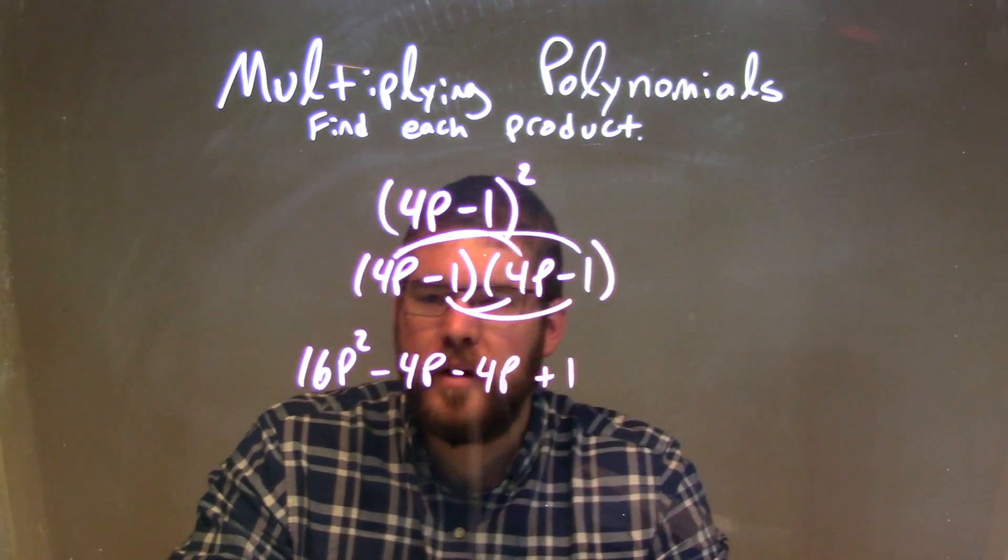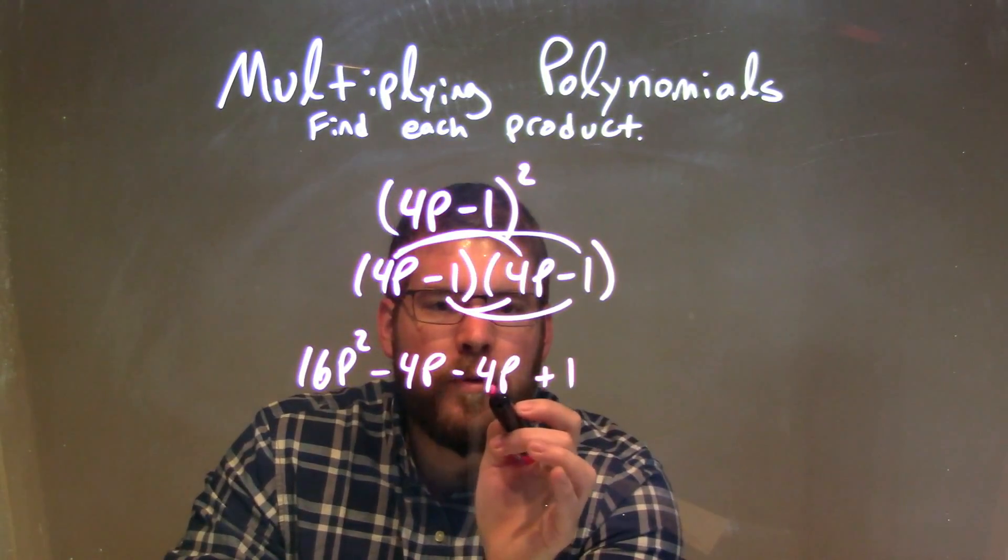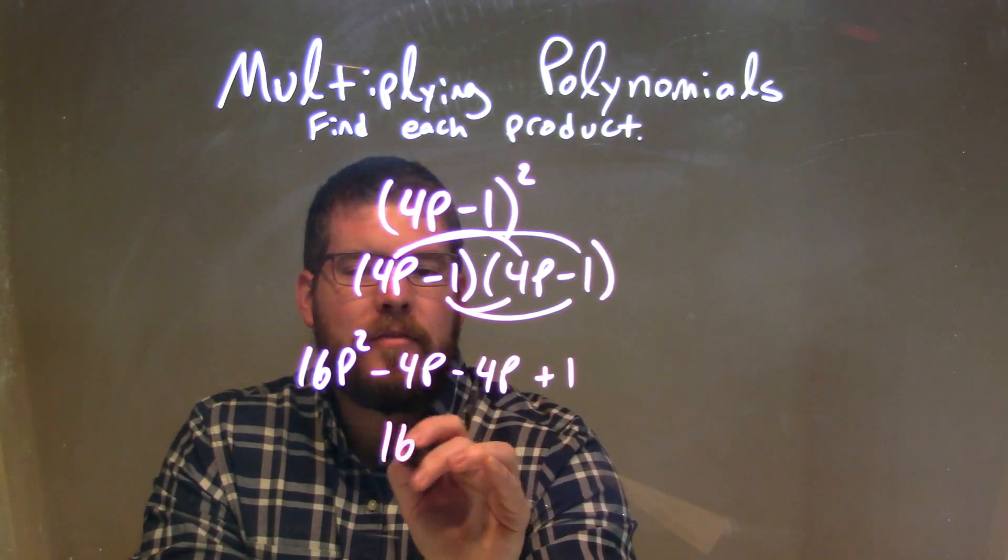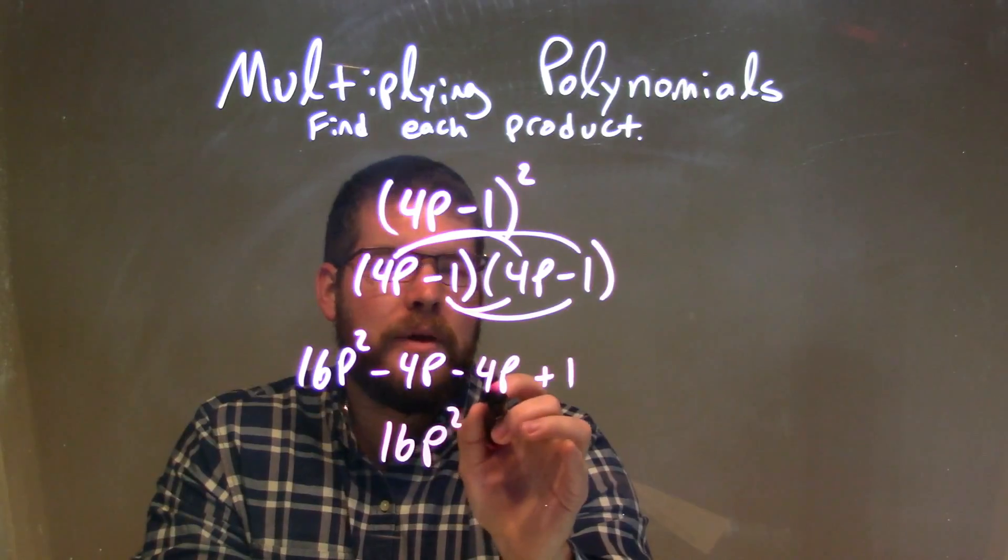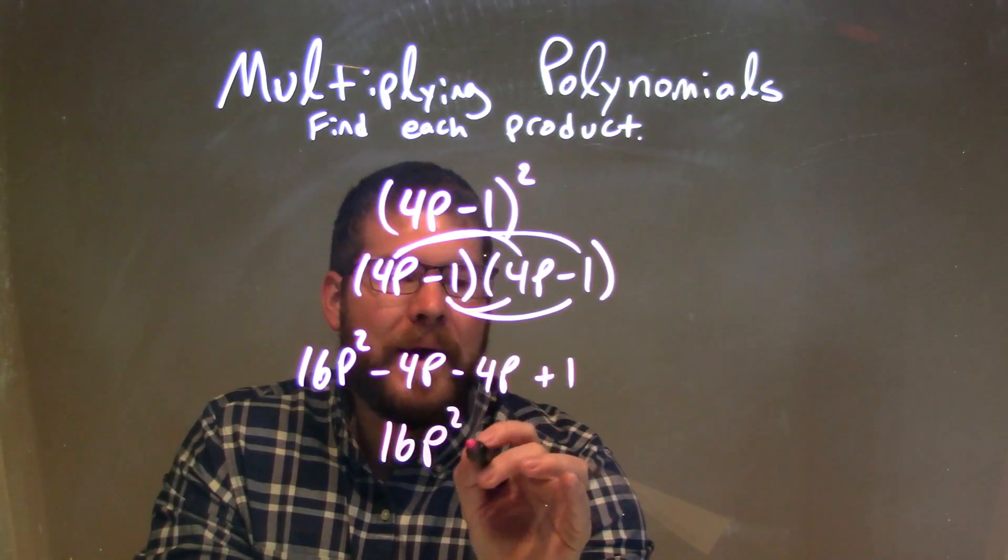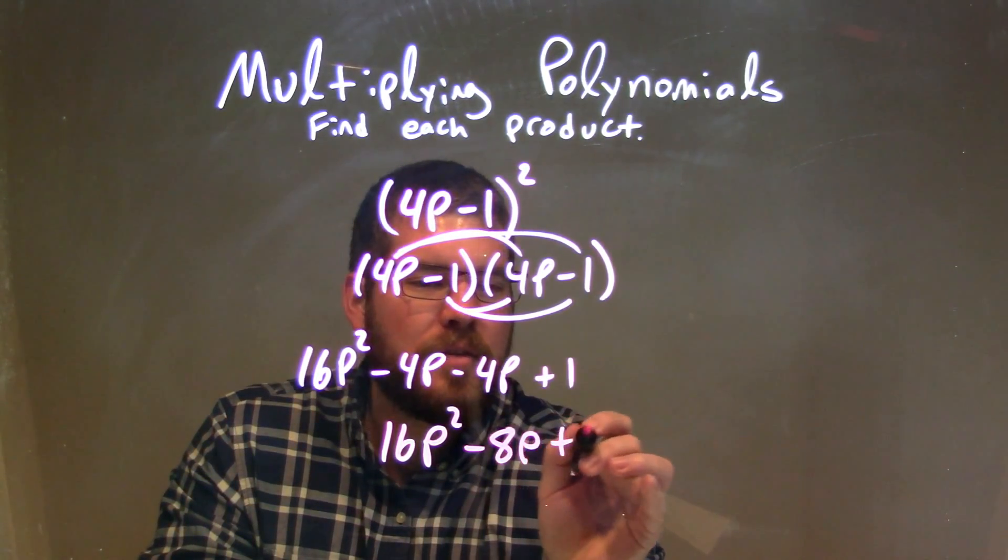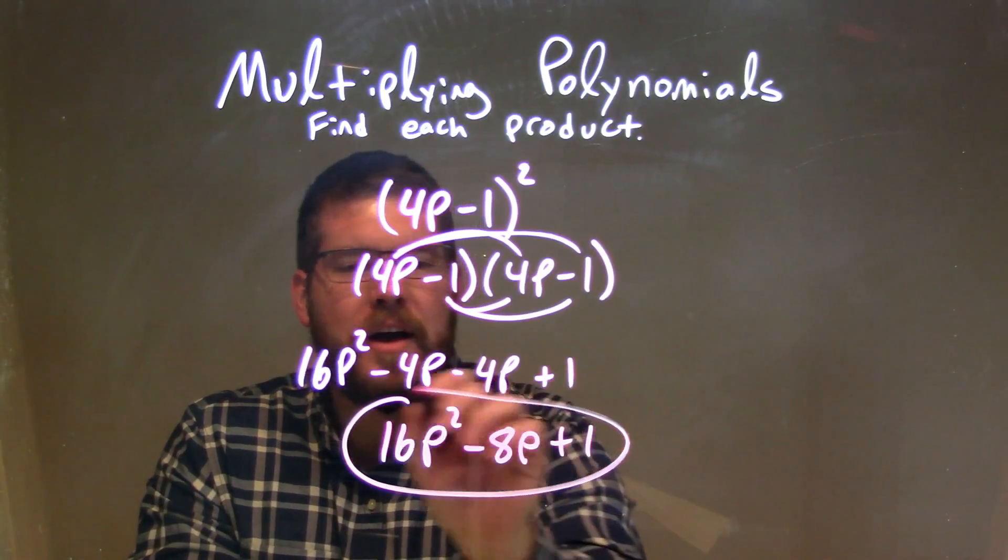Let's combine our like terms. Our only like terms are the -4p's, so we have a final answer: 16p² minus 4p minus 4p, which is -8p, plus 1. And there we have it, our final answer.